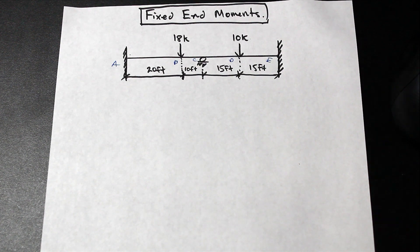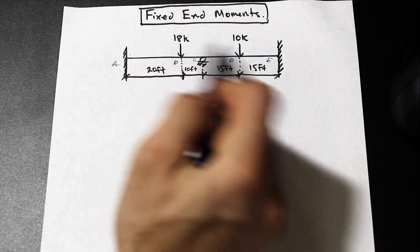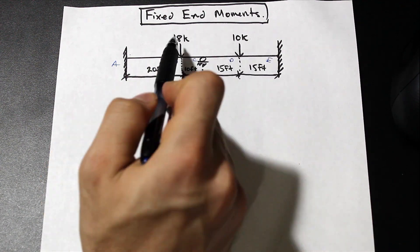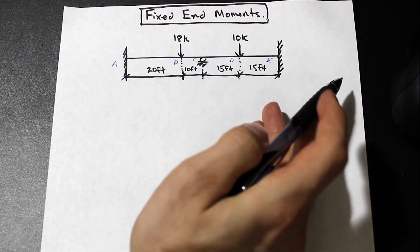With that being said, let's take a look at the question here. We have two fixed ends and a beam here. We have two sections to the beam so it's continuous, and we have two point loads, one at 18 kip and one at 10 kip.